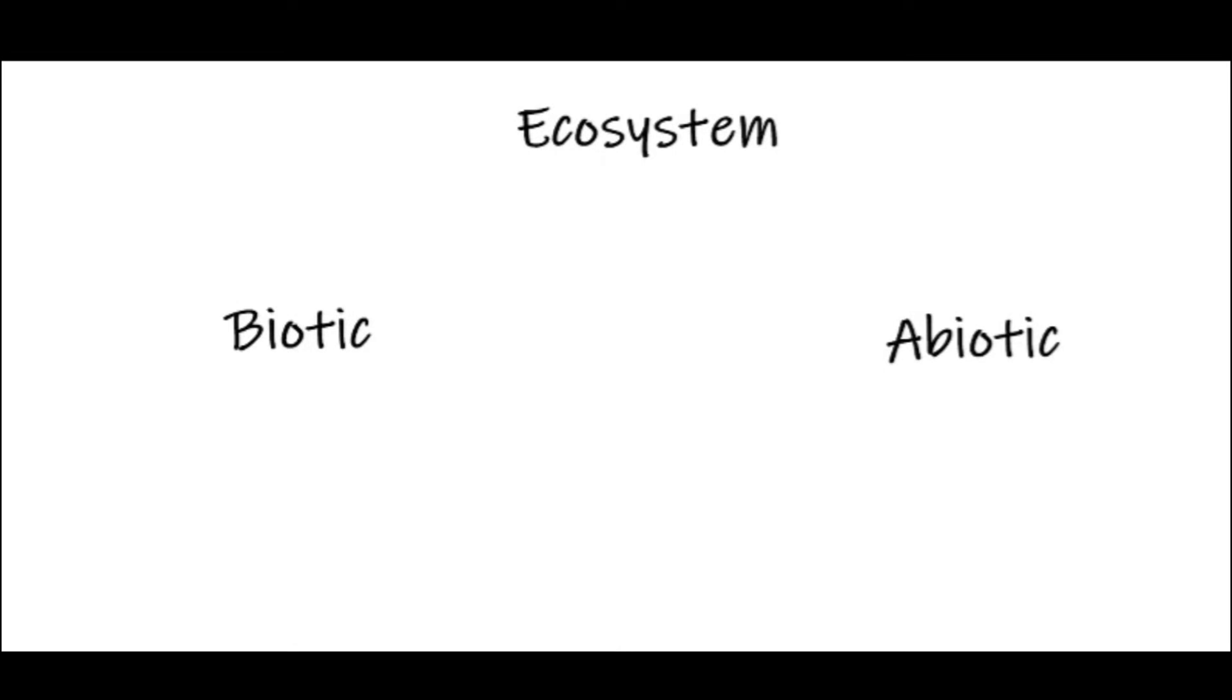So today we're going to learn about ecosystems. An ecosystem basically is a community where both biotic and abiotic components interact with each other as a system. So if you're new to these words, biotic and abiotic, don't worry.